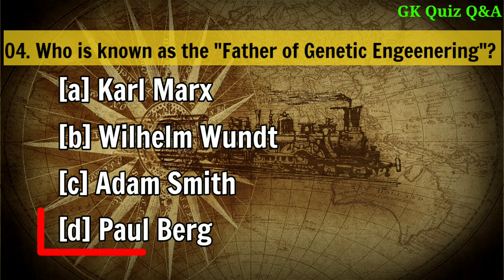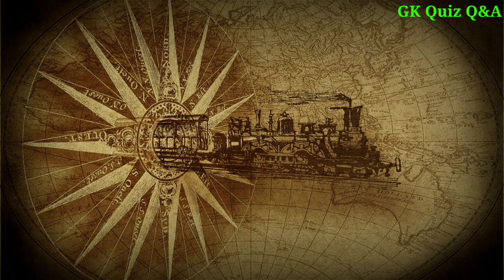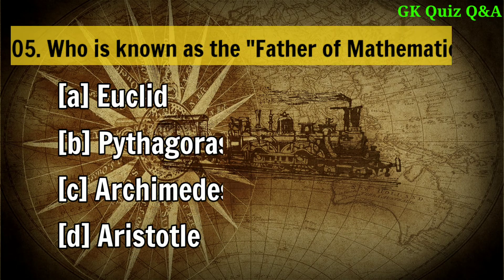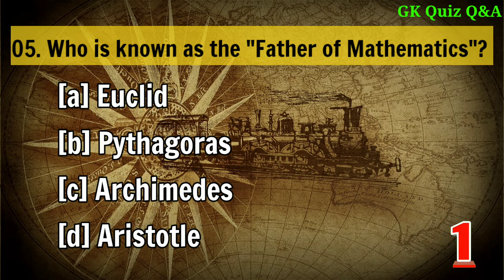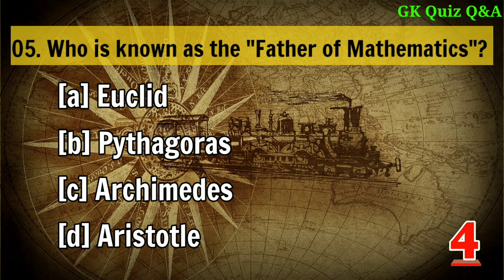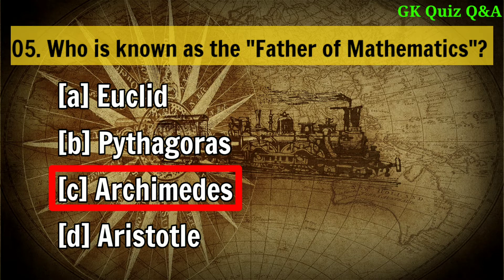Who is known as the father of genetic engineering? Answer D: Paul Berg. Who is known as the father of mathematics? Answer C: Archimedes.